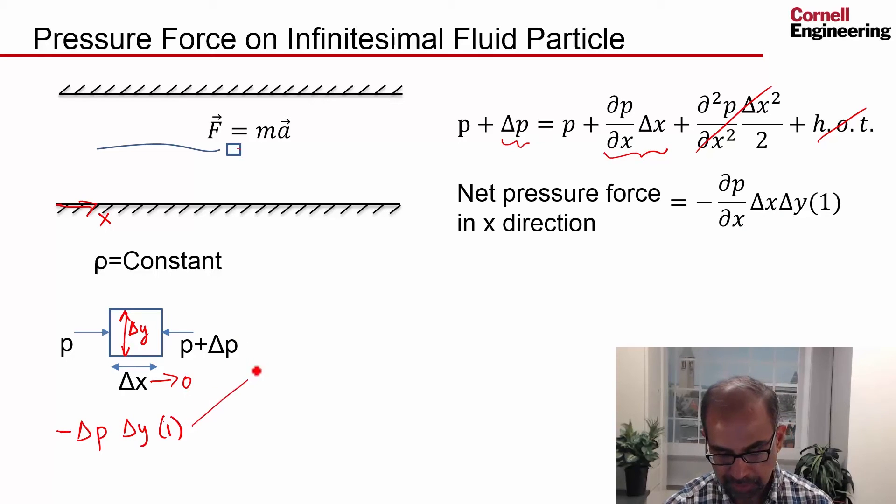So this comes from that using this expression. This is the volume of the fluid particle delta x delta y times 1. So if I take this to the left hand side, I'm going to get net pressure force in the x direction per unit volume is given by negative of the pressure gradient.